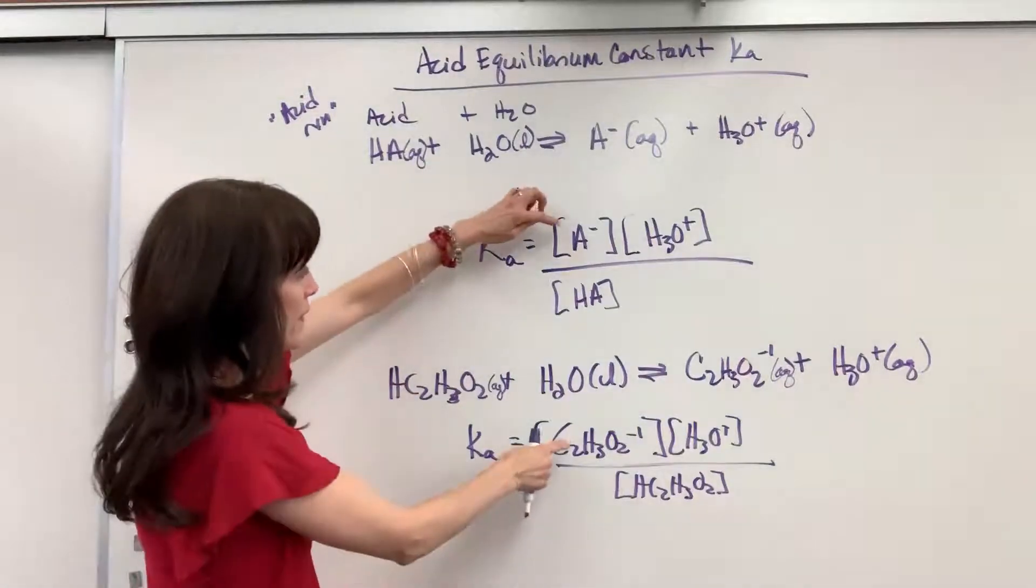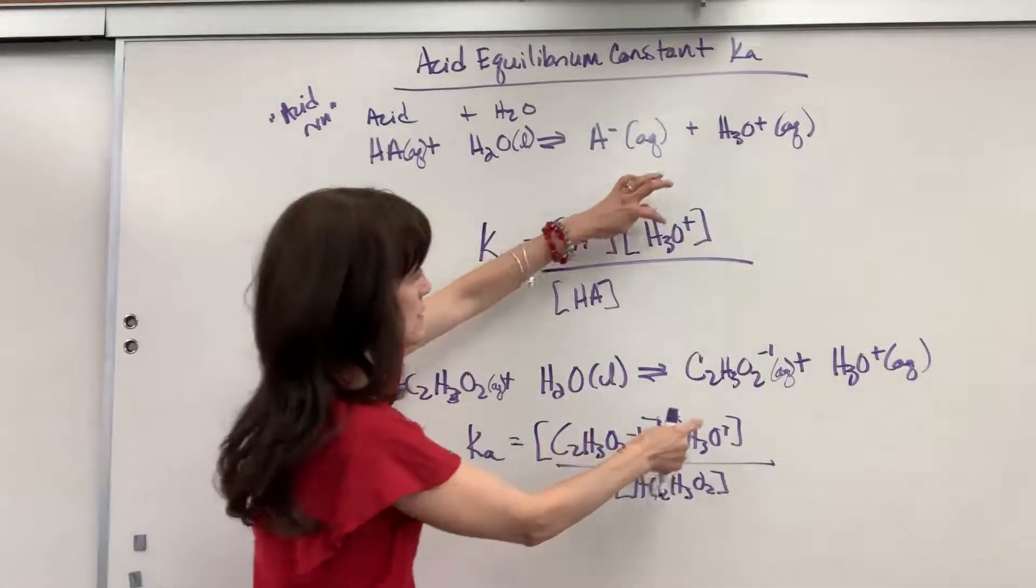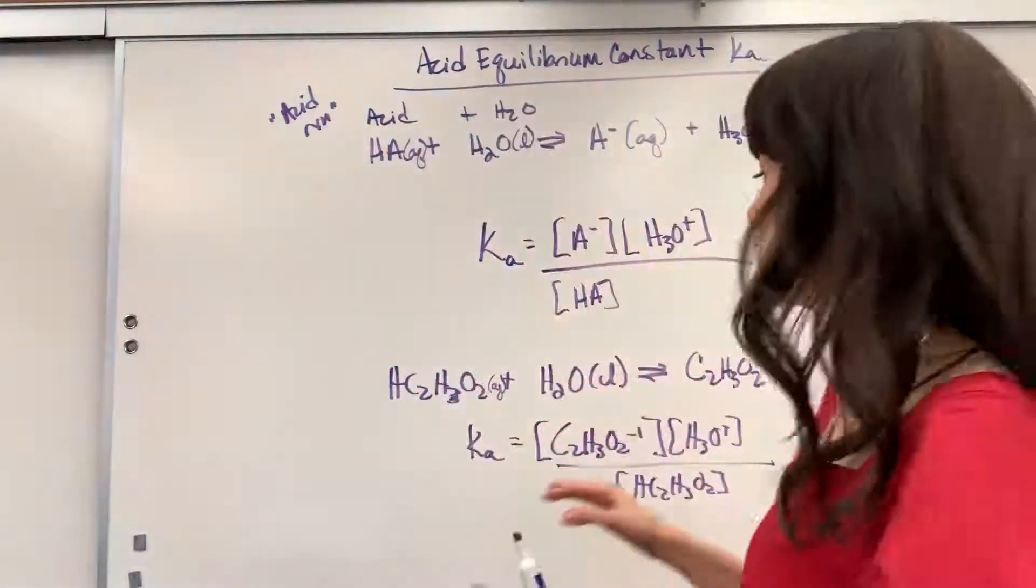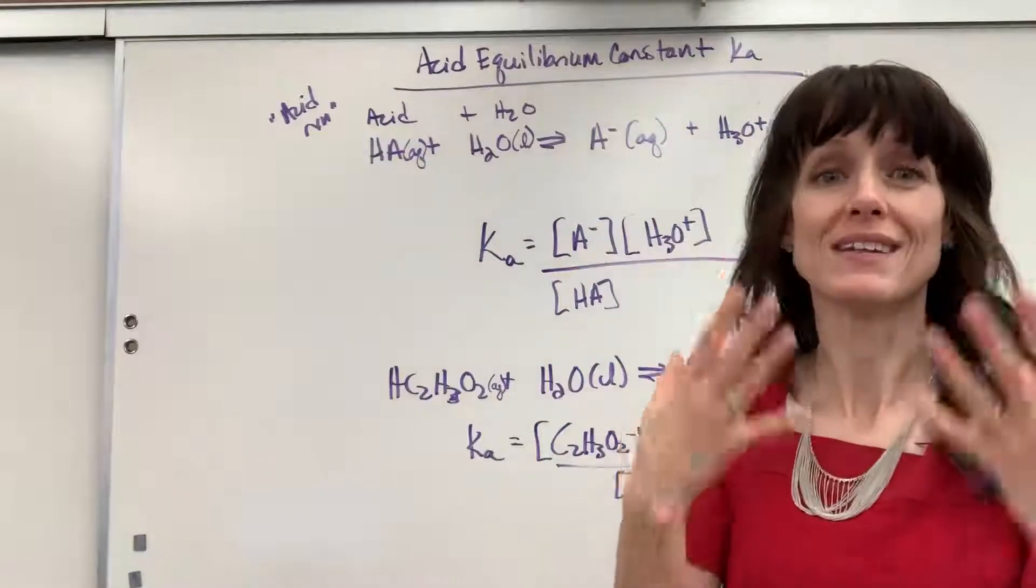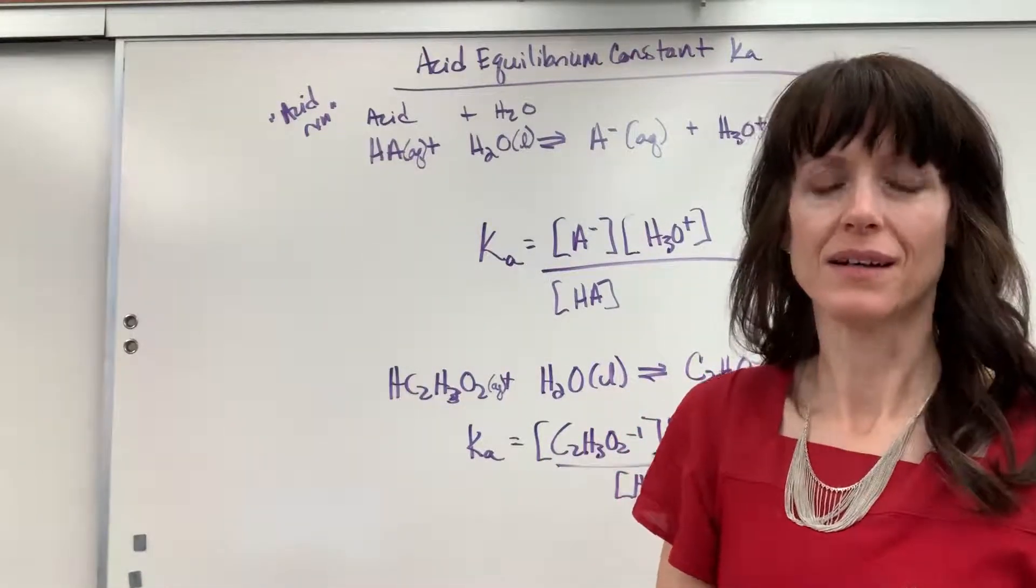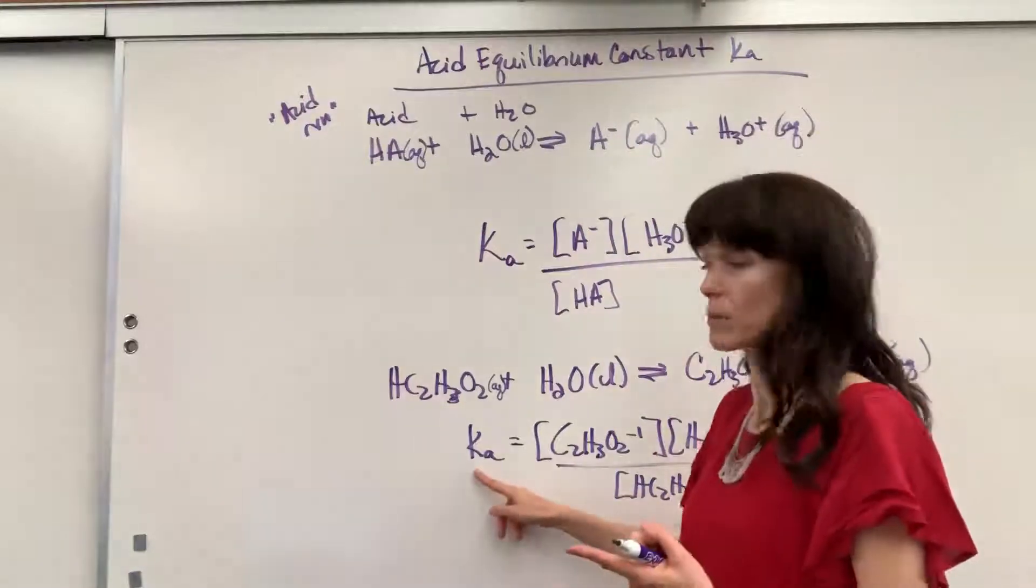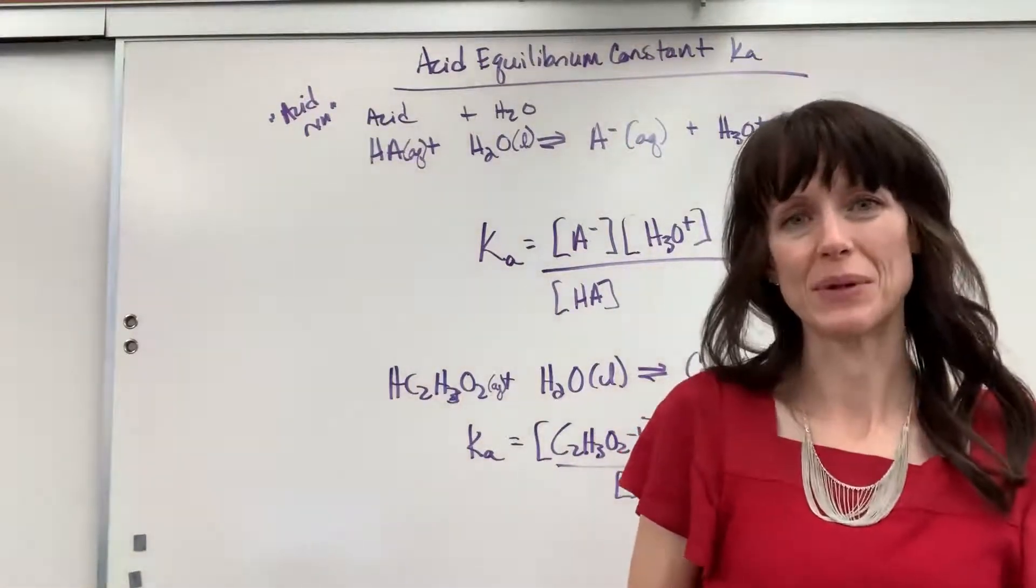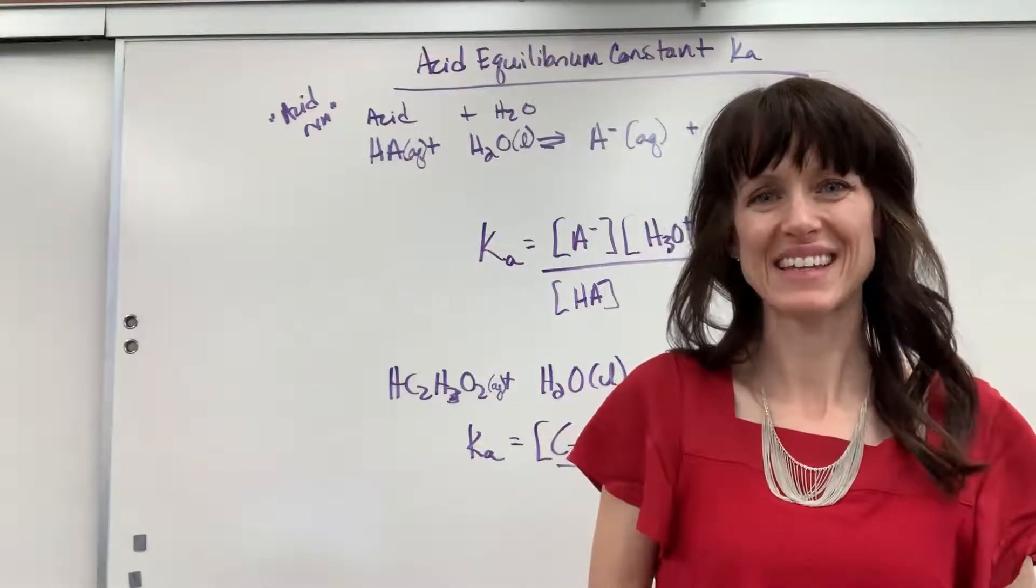Now let's compare. There's the conjugate base times hydronium divided by the acid. That's always what it will look like. This will be helpful as we move into using ICE tables, finding either the Ka equilibrium constant for an acid or finding a concentration when we're at equilibrium. Okay, good work. Have a nice day.